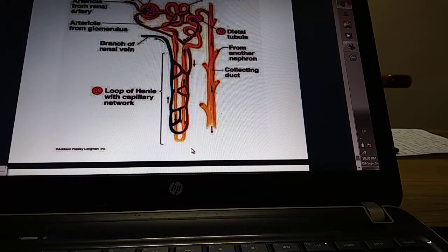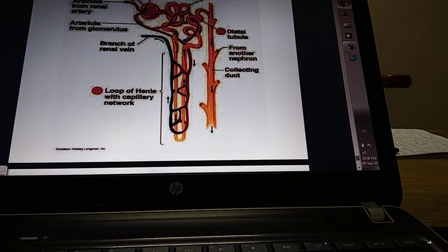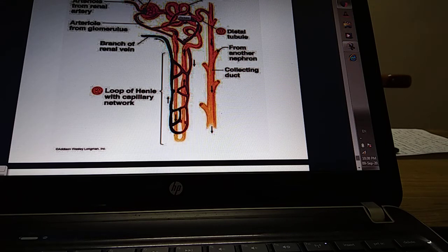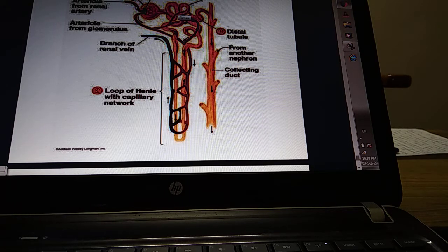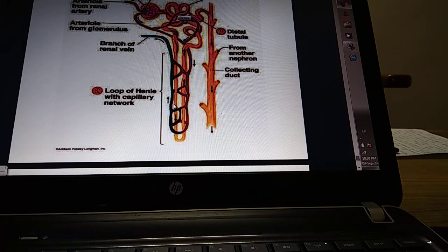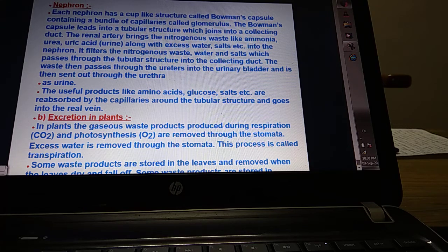So here you see another view - Bowman's capsule, proximal convoluted part, loop of Henle, distal convoluted part, and the collecting tubule. Then the afferent arteriole branches and the network is known as vasa recta. We have discussed these structures. Each nephron has a cup-shaped structure.